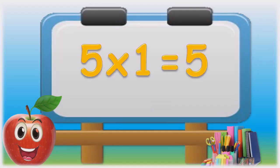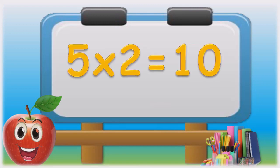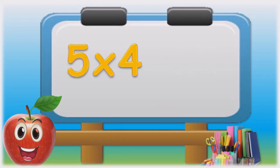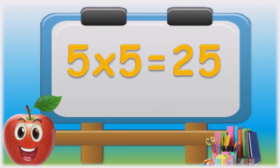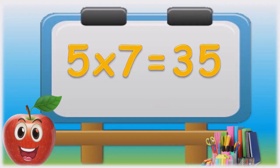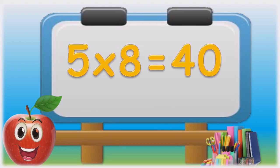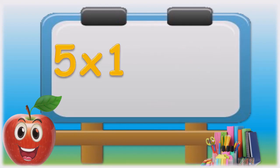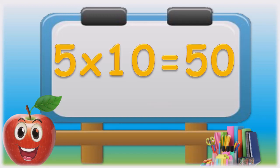Five ones are five. Five twos are ten. Five threes are fifteen. Five fours are twenty. Five fives are twenty-five. Five sixes are thirty. Five sevens are thirty-five. Five eights are forty. Five nines are forty-five. Five tens are fifty.